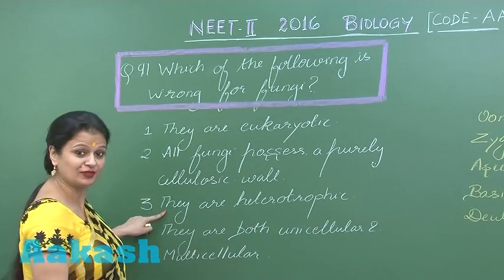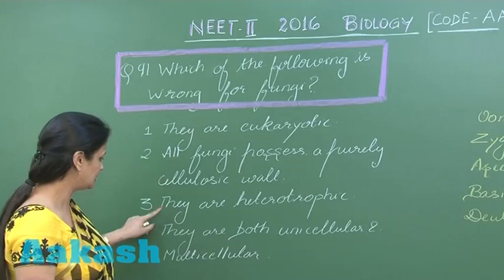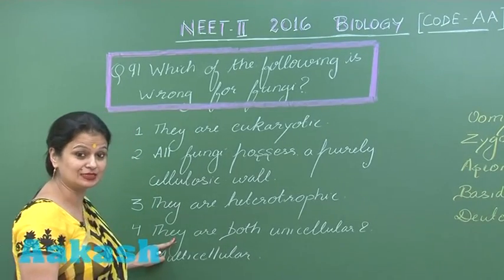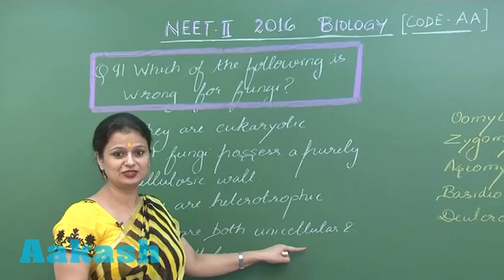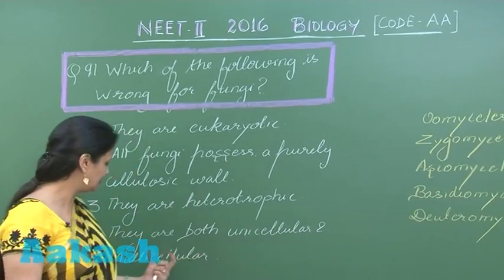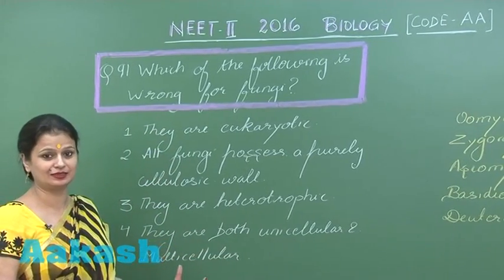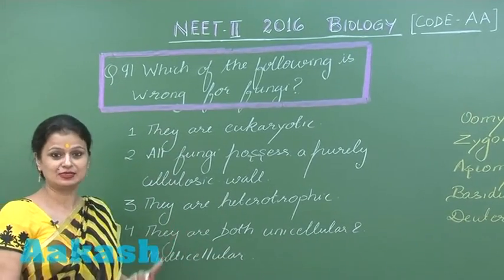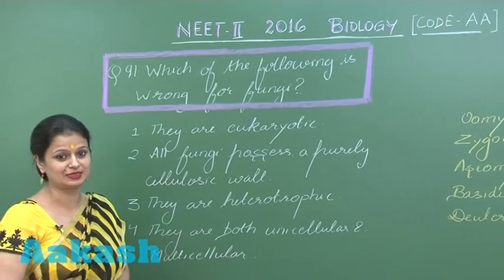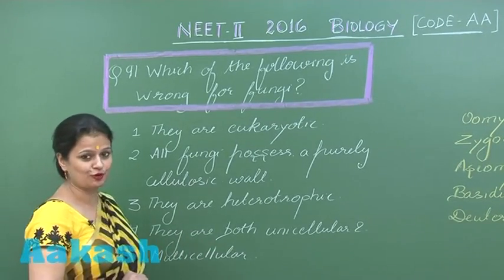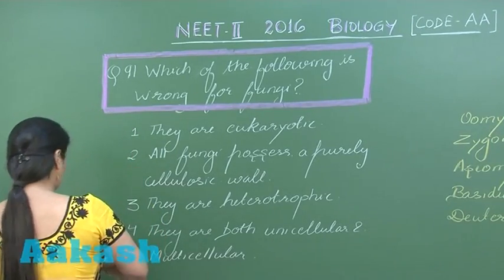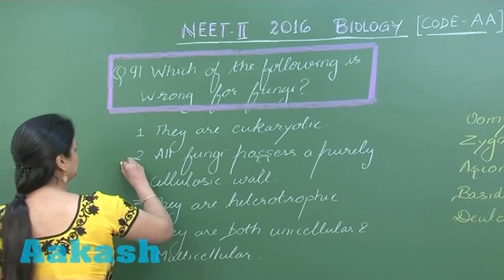They are heterotrophic — right. They are both unicellular and multicellular. Unicellular fungi is yeast and multicellular ones include Penicillium, Aspergillus, and several other examples. So out of the 4 options, the one which is wrong is option number 2.